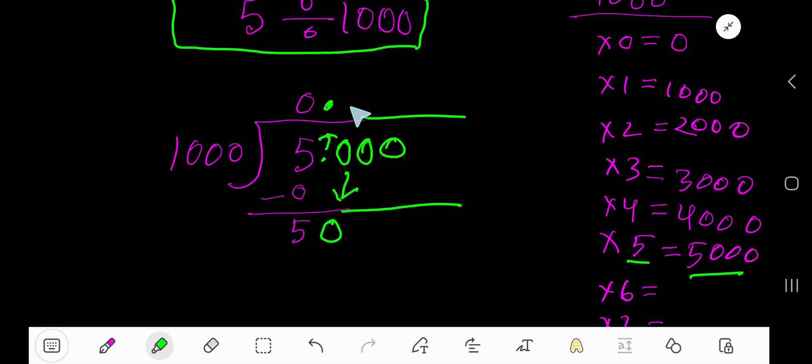1,000 goes into 50 how many times? 0 times. Then 0 times 1,000 equals 0. You subtract and you get 50.